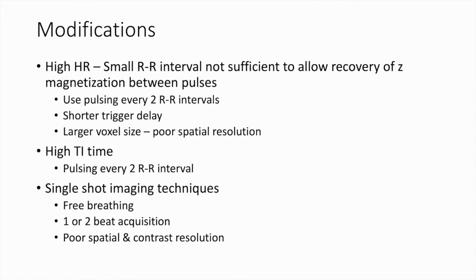The PSIR sequence can be modified based on patient parameters. A high heart rate with a short RR interval will not be sufficient to allow recovery of Z magnetization between pulses; this can be overcome by pulsing every second RR interval or by using a shorter trigger delay. A large voxel size can also be used at the expense of spatial resolution. Single-shot delayed enhancement techniques can also be used in uncooperative patients with free breathing, acquired in one or two beats, though the spatial and contrast resolution will be poor.